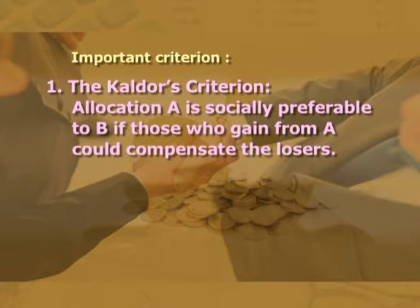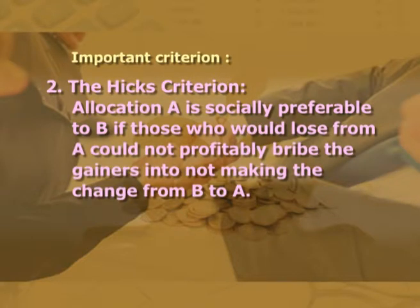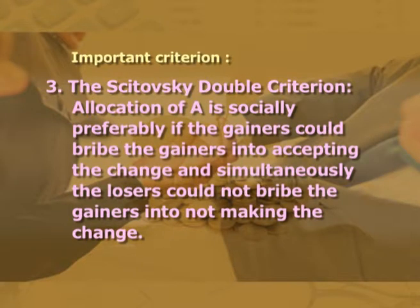But practically speaking, most changes would result in a reduction of someone's utility unless some compensation is provided. Three important criteria on this discussion are: first, Kaldor's criteria — allocation A is socially preferable to B if those who gain from A could compensate the losers. Second, the Hicks criterion — allocation A is socially preferable to B if those who would lose from A could not profitably bribe the gainers into not making the change from B to A. Third, the Scitovsky double criterion — allocation A is socially preferable if the gainers could bribe the losers into accepting the change and simultaneously the losers could not bribe the gainers into not making the change. This criterion implies interpersonal comparisons of utility expressed in monetary terms. The criterion assumes that gainers and losers truthfully reveal their gains and losses, and it fails if they do not reveal or go for bargaining.